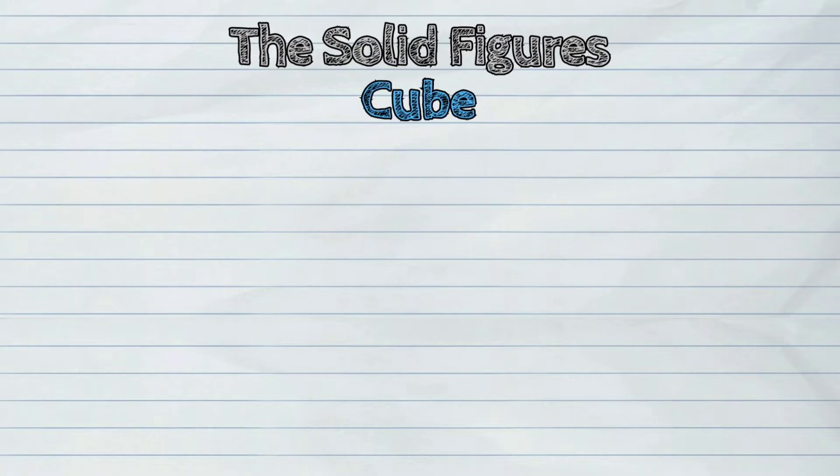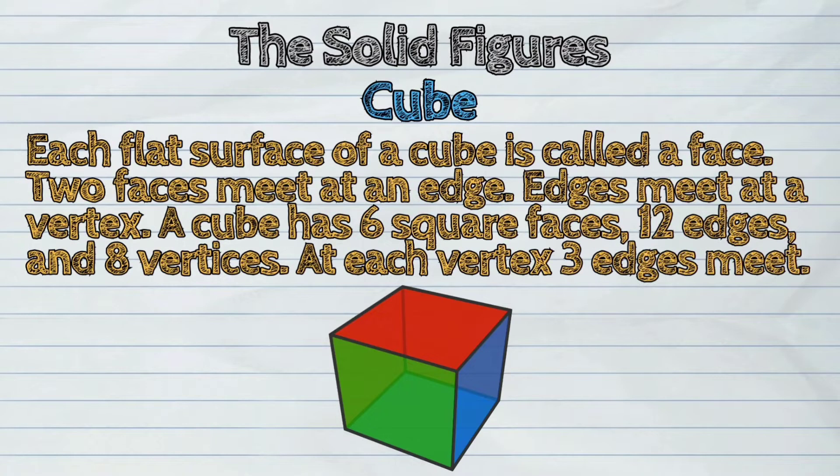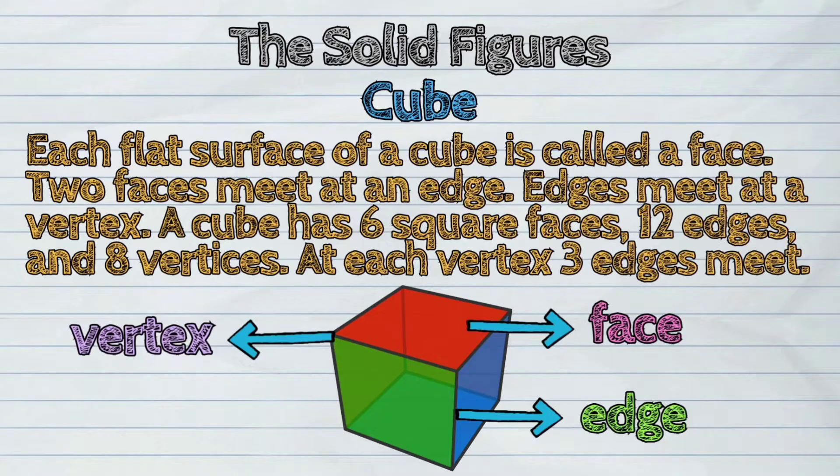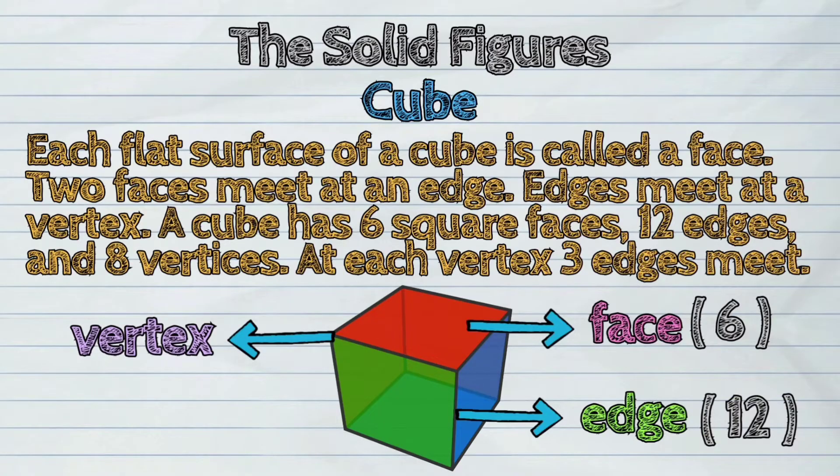First, the cube. Each flat surface of a cube is called a face. Two faces meet at an edge. Edges meet at a vertex. A cube has six square faces, twelve edges and eight vertices. At each vertex, three edges meet.